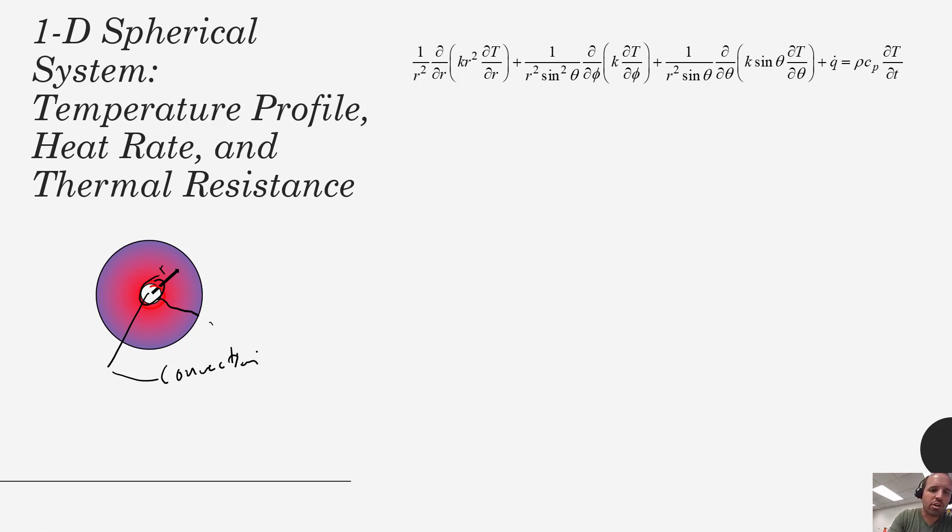So we would start with the heat equation. I've got the spherical form of the heat equation shown above. Because this is a one-dimensional system we are not considering temperature variation in the phi direction, so dT/dPhi is zero, or in the theta direction. We are only considering temperature variation in the r direction. Also we are not considering generation or accumulation because our system is at steady-state.